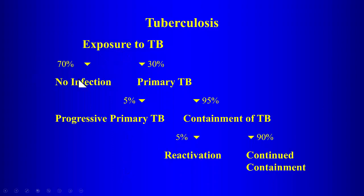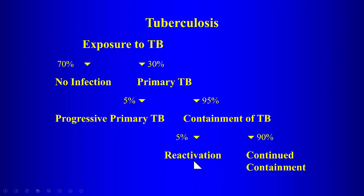When people are exposed to TB, in 70% of cases nothing happens. In 30%, patients develop a primary infection, and a small percentage of those progress to progressive primary disease. The vast majority of disease is contained. The only evidence of exposure may be a positive PPD test. A small percentage of cases can have reactivation of dormant disease later in life.